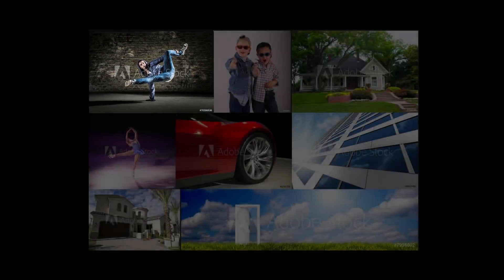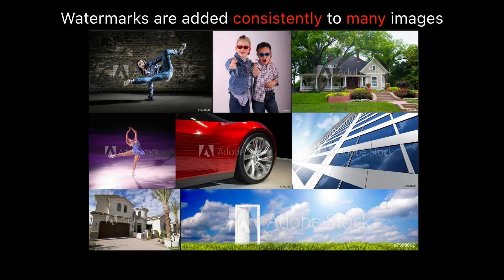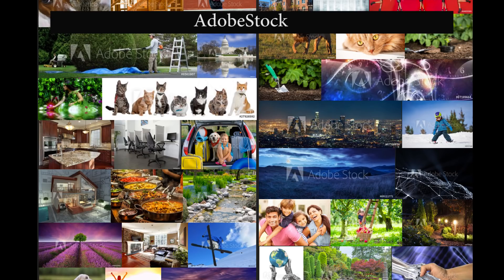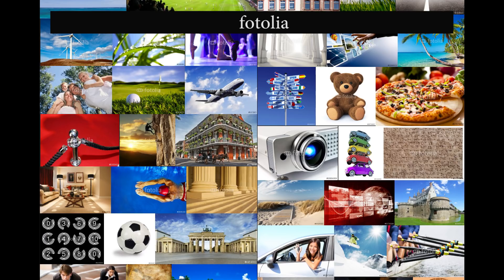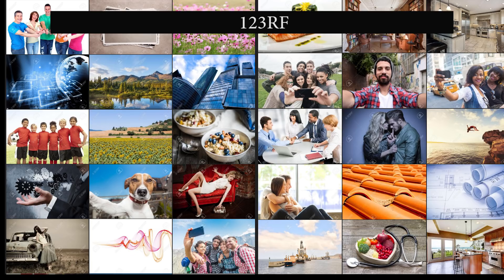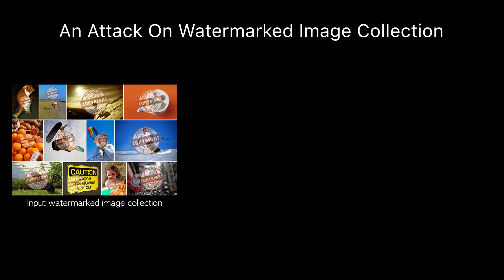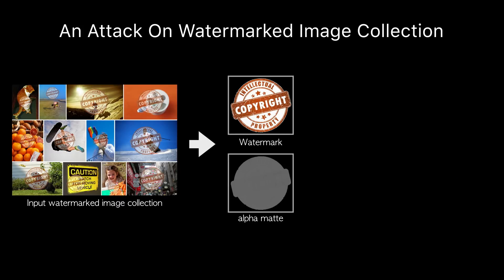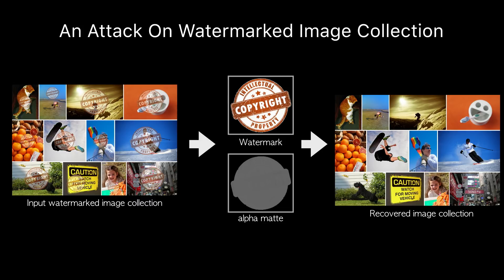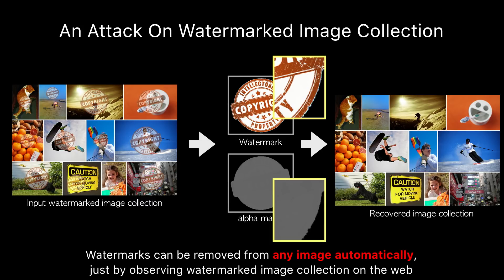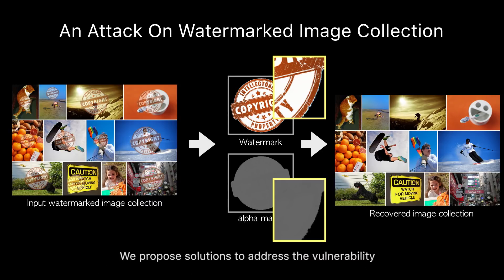However, watermarks are typically added in a consistent manner to many images. In fact, we've found that major stock content websites all embed the same watermarks in millions of their images. In this paper, we show that this consistency can be exploited to automatically infer the watermark from an image collection and to remove it from any image marked by it. We also propose solutions to address this vulnerability.